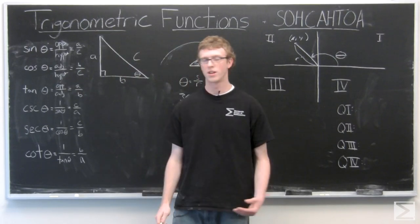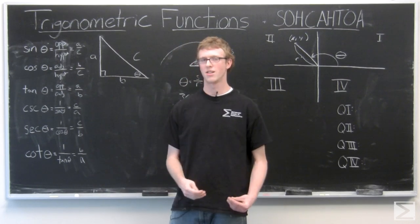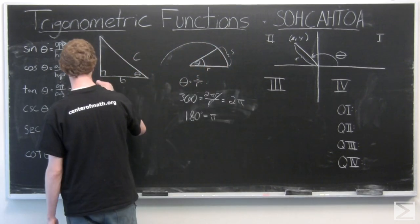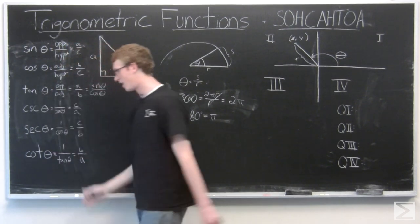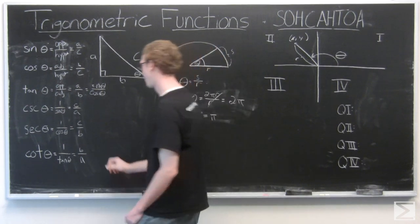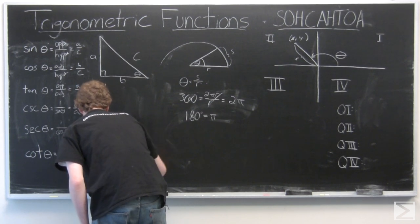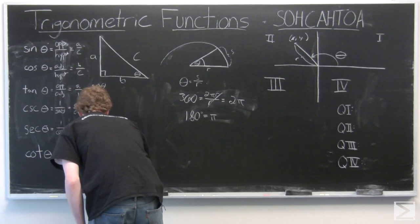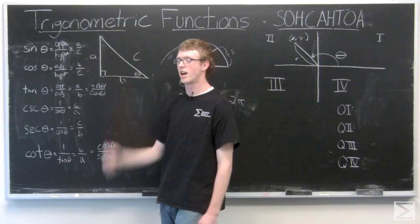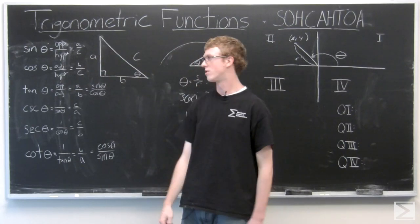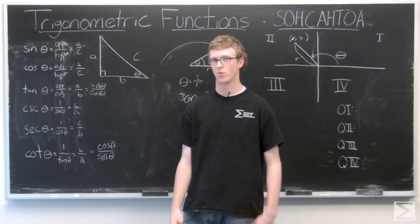An important thing to notice about these trig functions: tangent of theta is really just sine theta over cosine theta. And cotangent is really cosine over sine. So the most important trig functions are sine and cosine — you can find all the other trig functions from those two. Those are essentially the two most important and the two we'll be working with most.